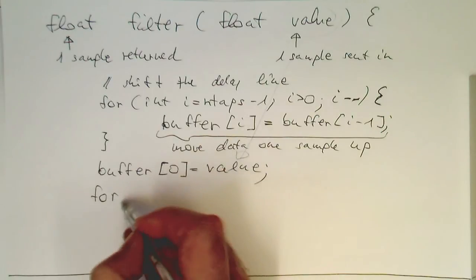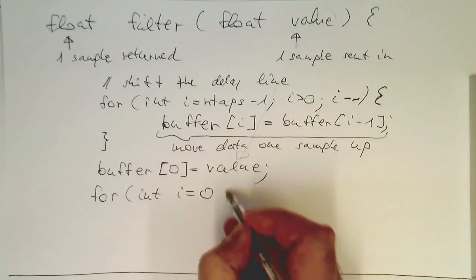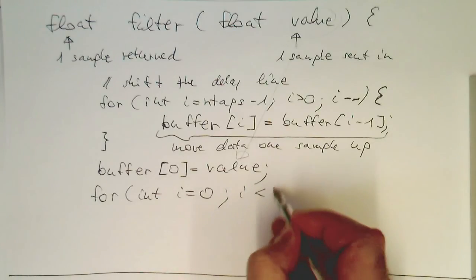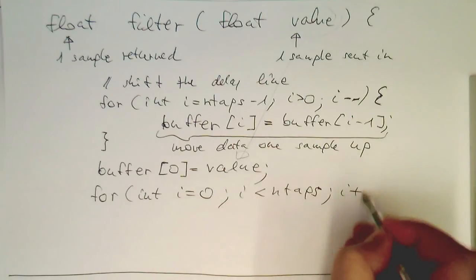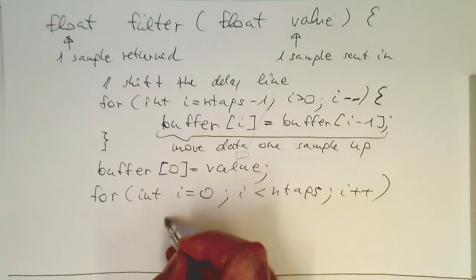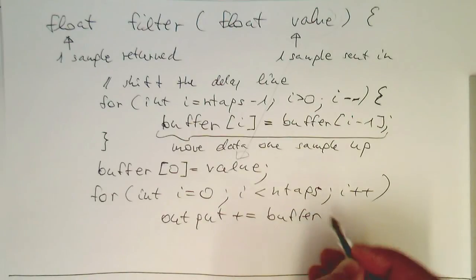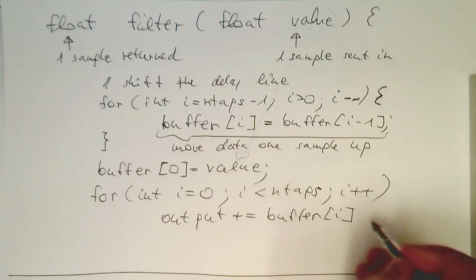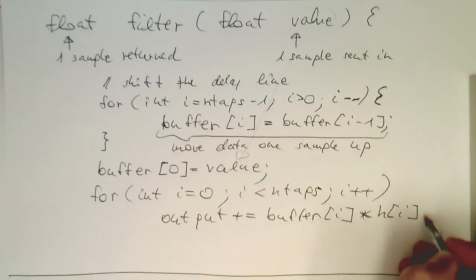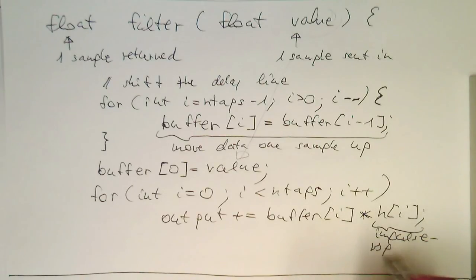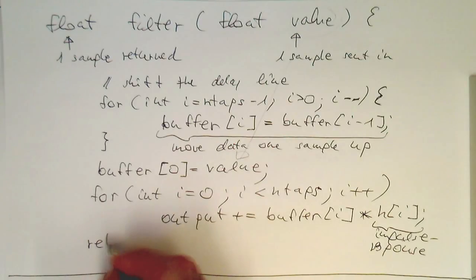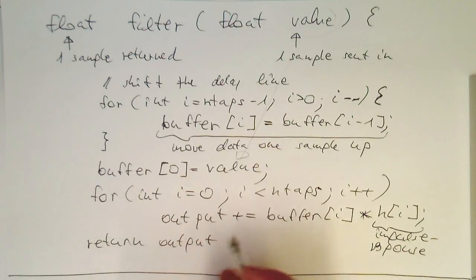So we do for int i zero, now we can do it upwards. So i is smaller than n tabs, so it's our number of tabs, i plus plus. And then just creating our output by using the buffer and multiplying this by our h of i, which is our impulse response. So once we have done this, we just do a return output. And with that, our filter function has been implemented.